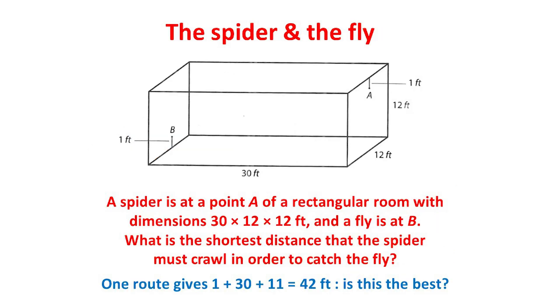Here's a related puzzle concerning a spider and a fly. A spider is at a point A of a rectangular room with dimensions 30 by 12 by 12 feet and a fly is at B. What is the shortest distance that the spider must crawl to catch the fly? One route is for the spider at A to descend to the floor, that's 11 feet, cross it, that's 30 feet, and then climb up to the fly at B, which is 1 foot, giving 42 feet in total.